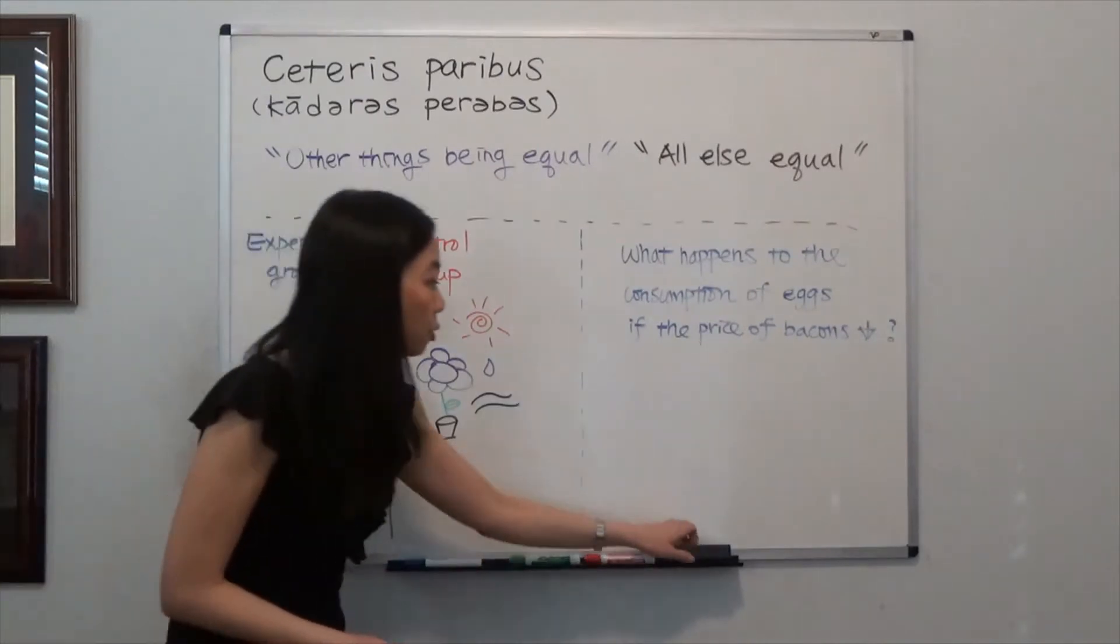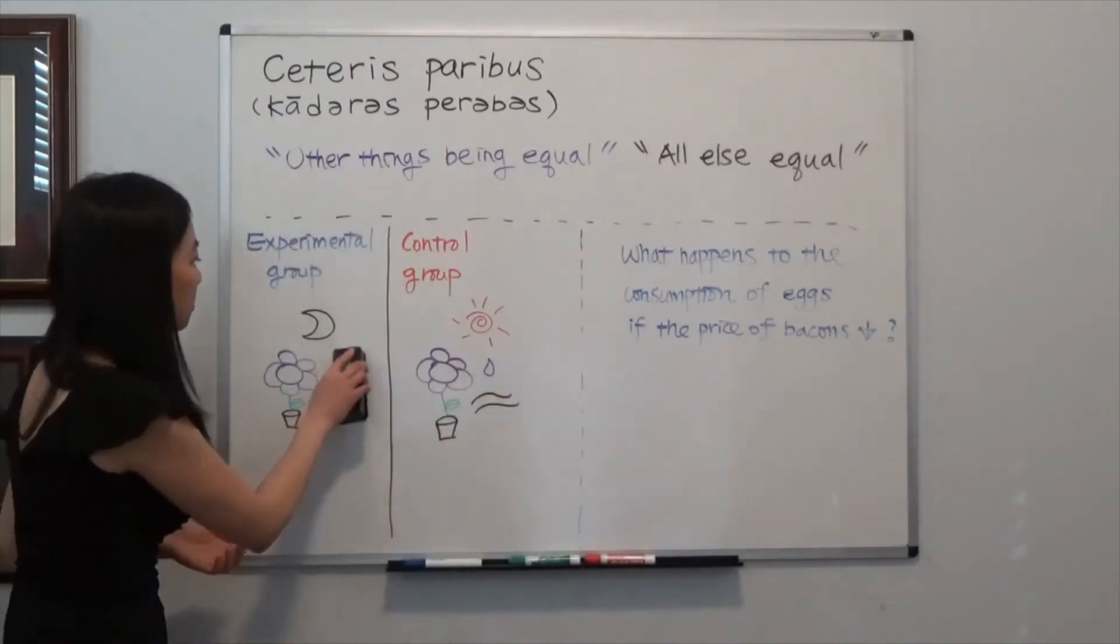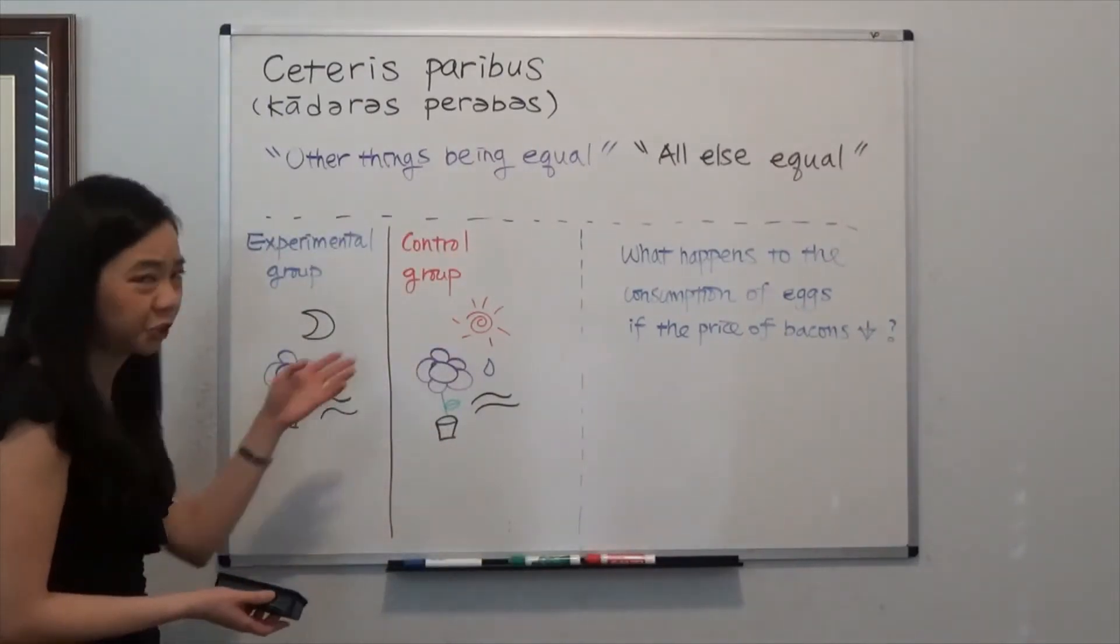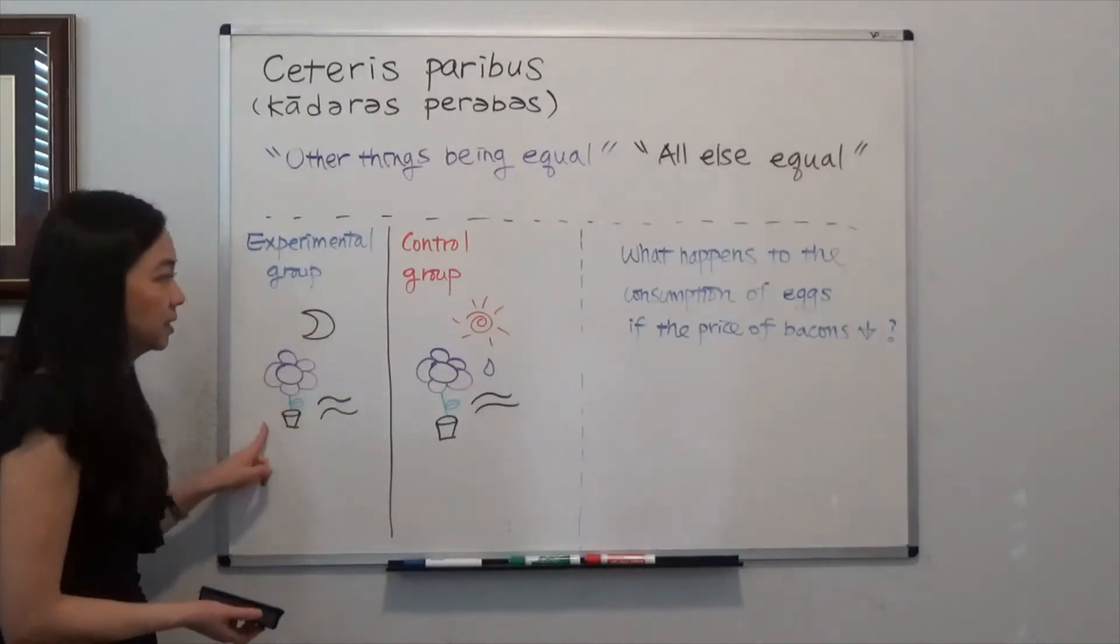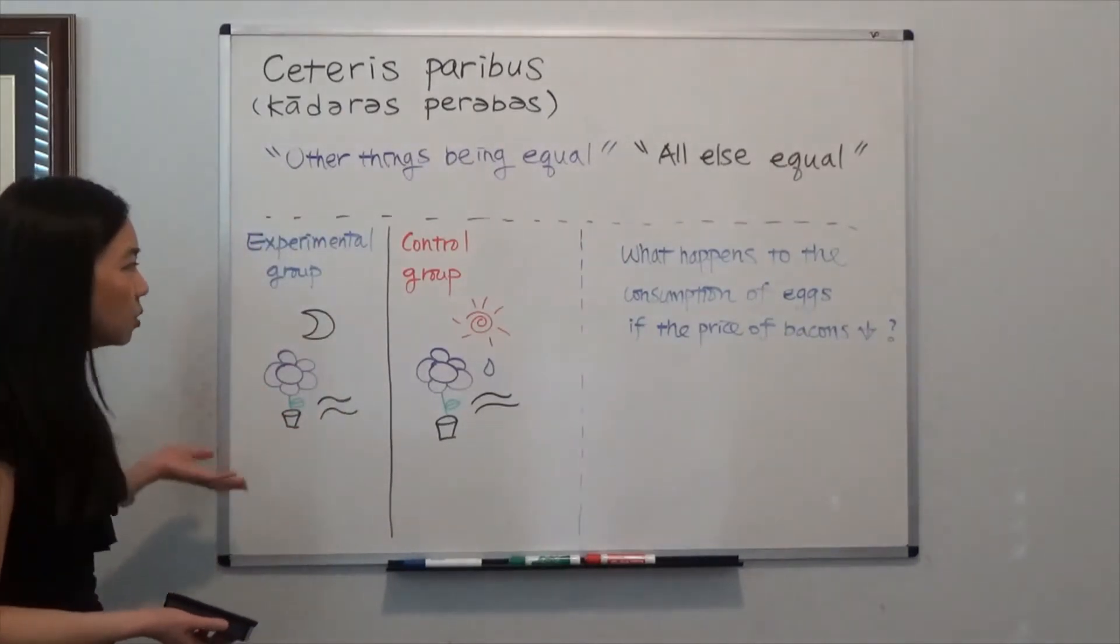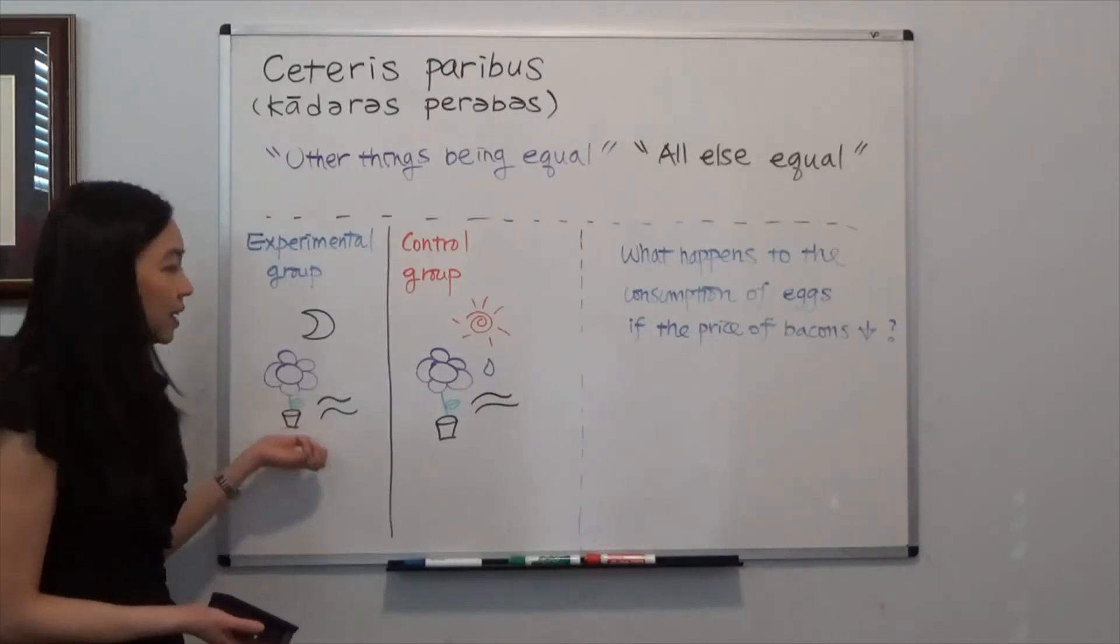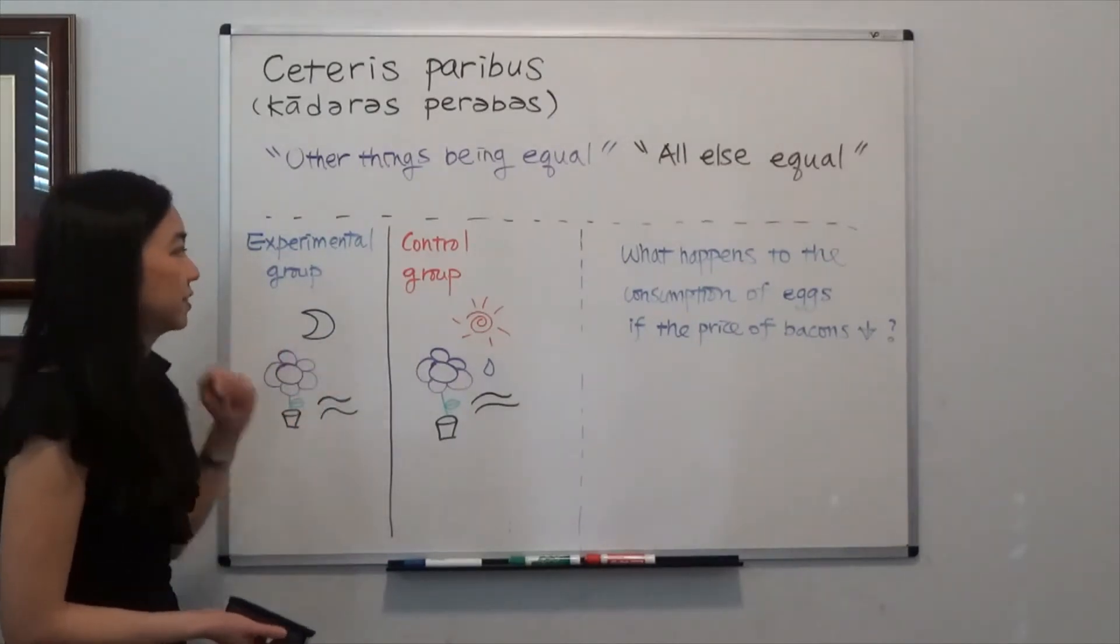Now if you also take away the water from the experimental group, you change other things. And you see this plant is dead. Then you don't know whether this plant is dead because of the lack of water or because of the lack of sunlight.